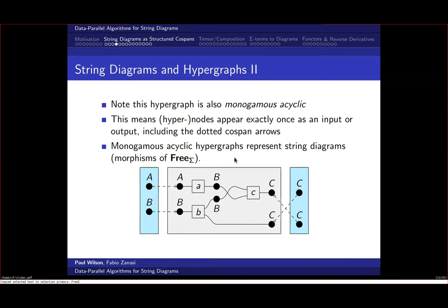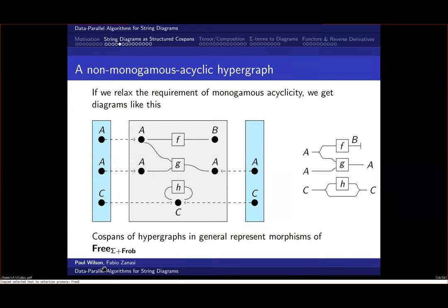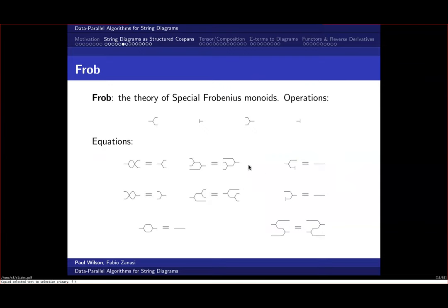The hypergraphs must be monogamous acyclic, meaning each node appears exactly once as a source and exactly once as a target, including interface nodes. This guarantees we represent morphisms of free(sigma). Without this condition, we get morphisms of free(sigma + Frob), requiring Frobenius generators—the ability to split wires—added to the signature along with the equations of a special Frobenius monoid.